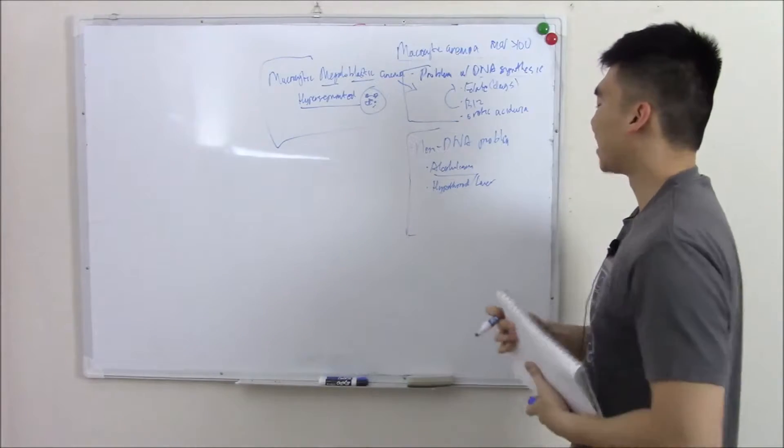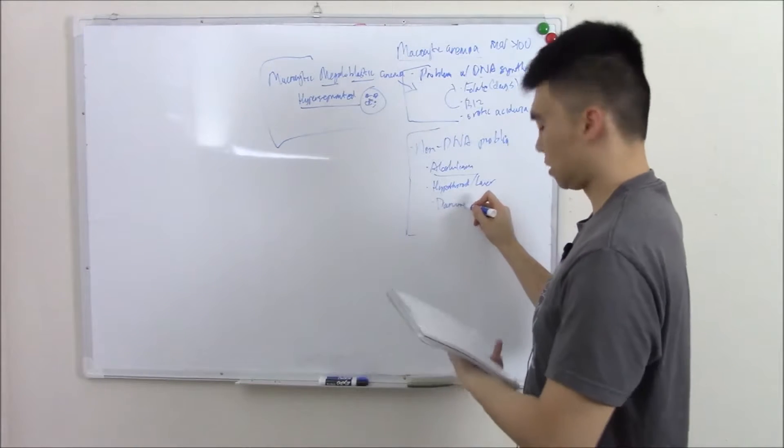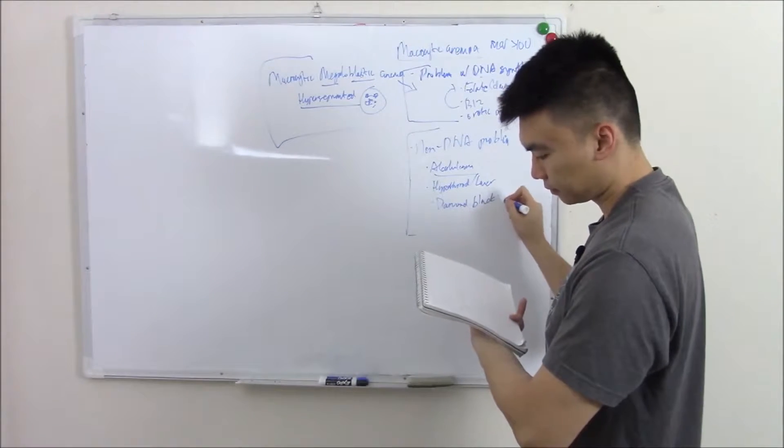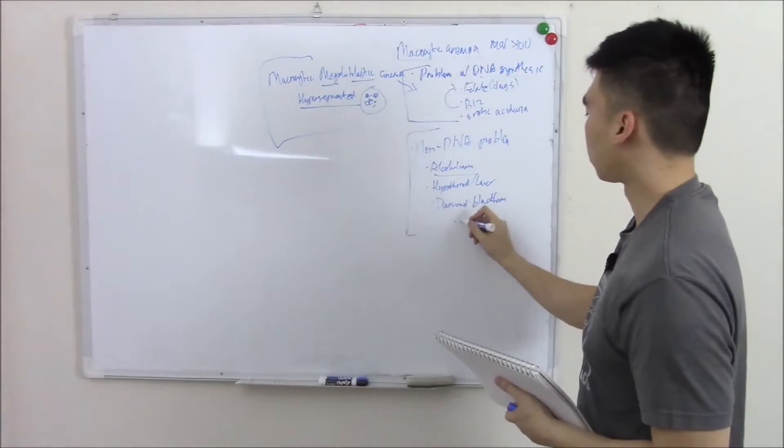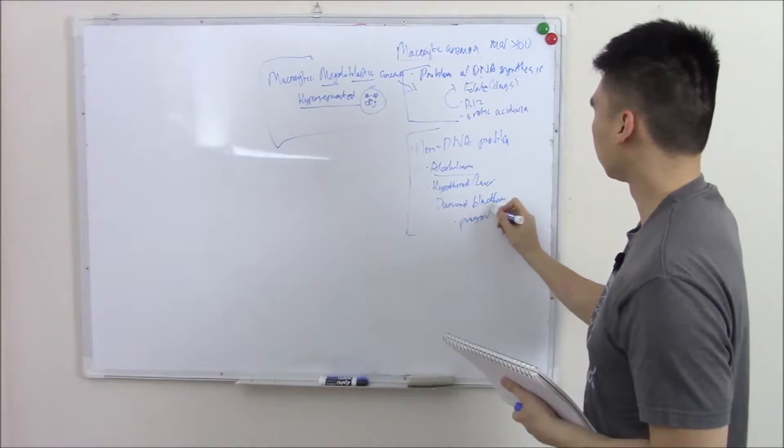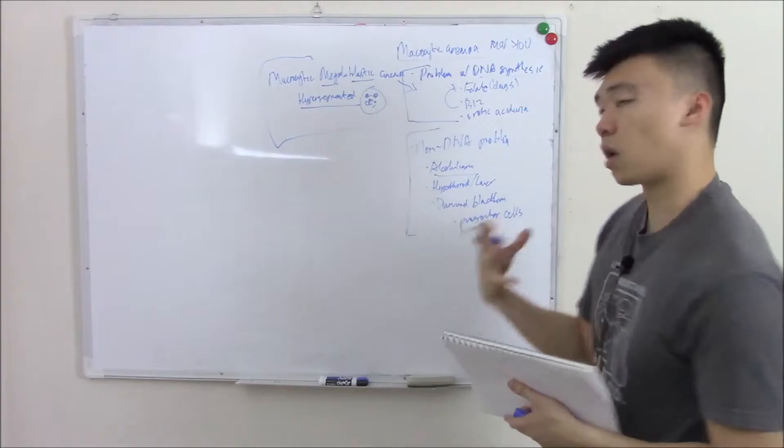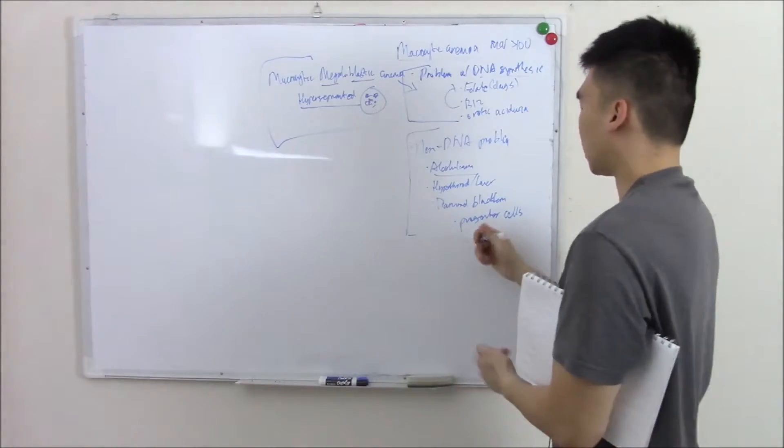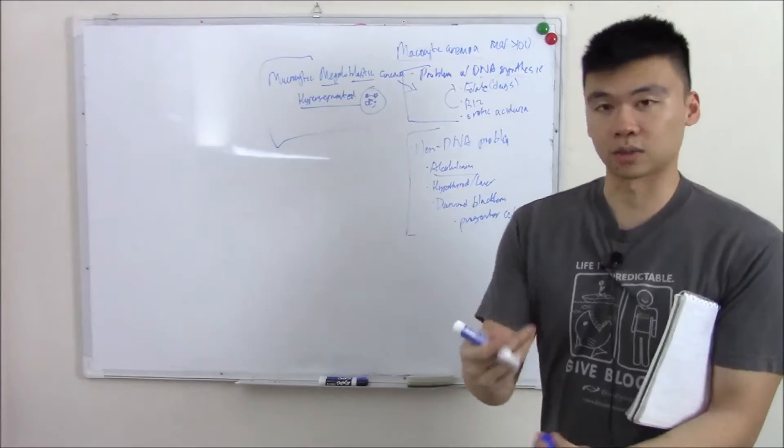You can also have Diamond-Blackfan anemia, which I think is a really cool name. Diamond-Blackfan is a problem with the progenitor cells and they just grow a little larger. So that's what gives you the macrocytic anemia—they grow larger and they don't grow enough, that's what gives you the anemia.